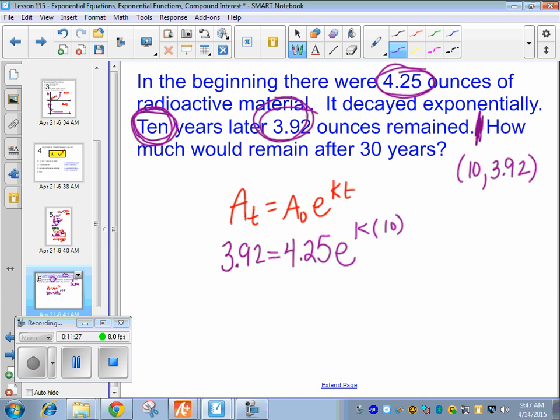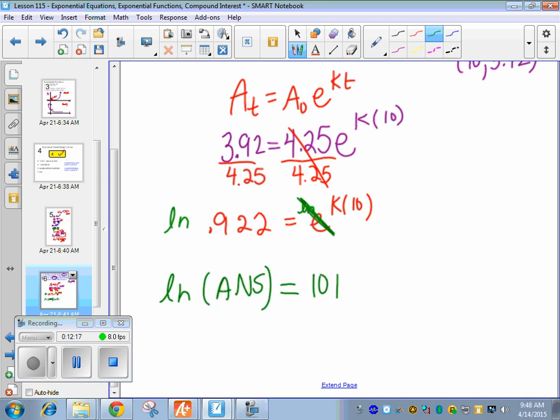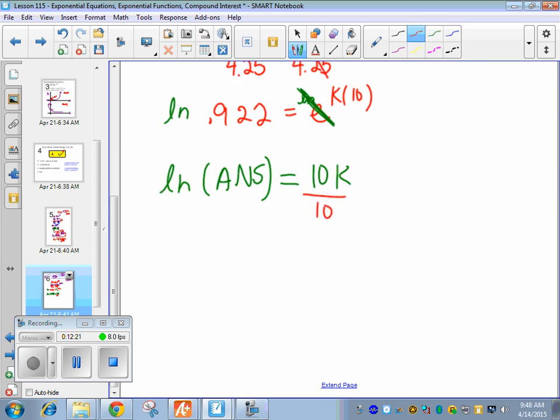The point of that one coordinate point is so we can find k. You have to divide by 4.25 first on both sides. So 0.922. Now, you can use second answer so you get an exact value. So leave that 0.922 on your calculator. 3.92 divided by 4.25. Now, to cancel the E, we're going to take the LN of both sides. This cancels it here. And now, hopefully, on your calculator, you can just plug in LN second answer, and it saved it. You will get a more exact answer. And then keep that answer and divide by 10.